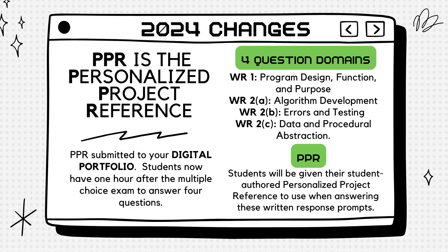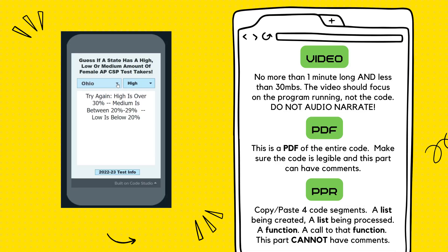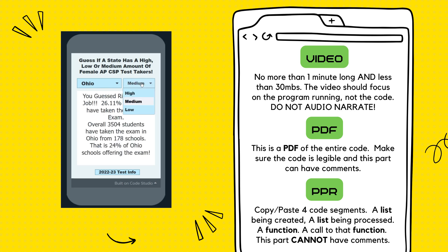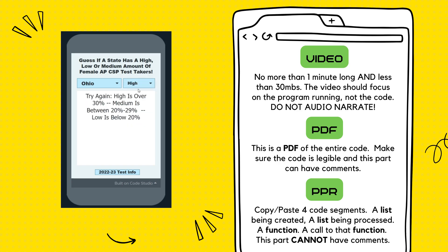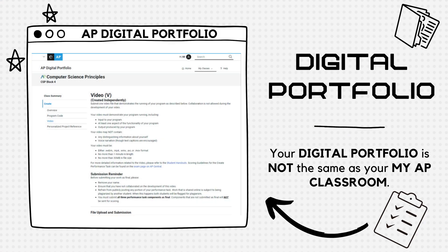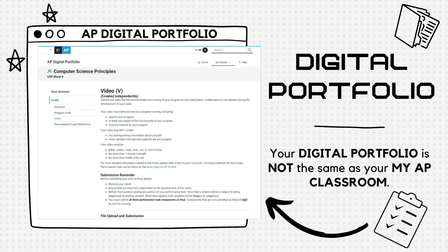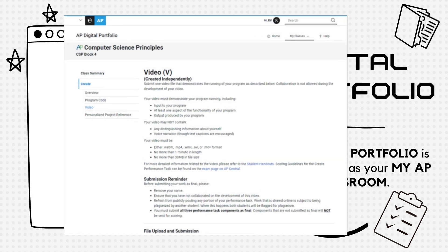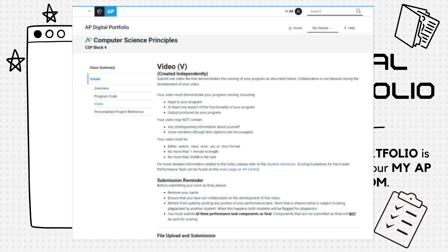Is there anything that stays the same? A lot of what you have to do remains unchanged from previous years. You still build an app and submit several items to your digital portfolio. Remember, your digital portfolio is different from AP Classroom — they are separate websites. Make sure you're on the right one. It should look like this.